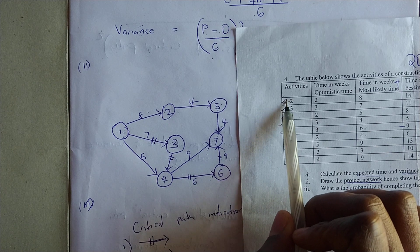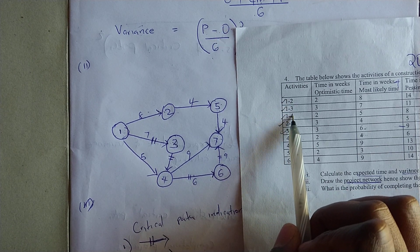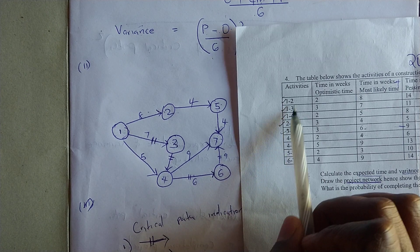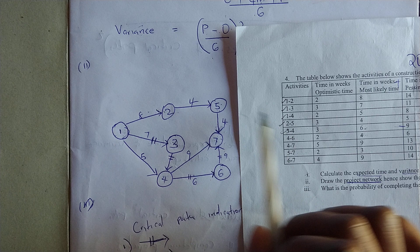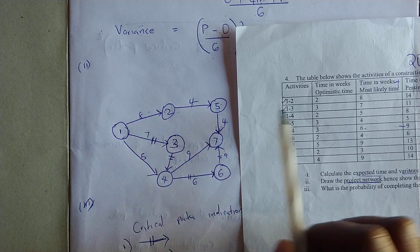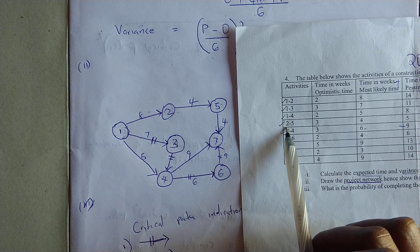Here we have from one to two, activity one to three, and activity one to four. This simply means that one is a starting point for these three activities. You have here from one to two, from one to three, and one to four. So we are done with this one.